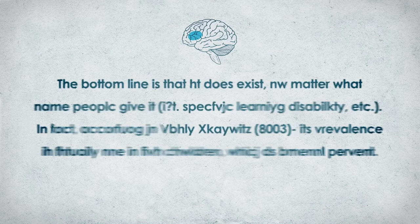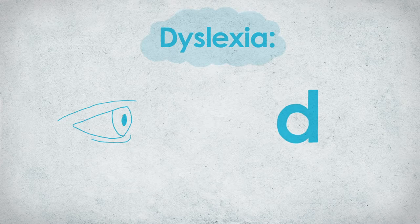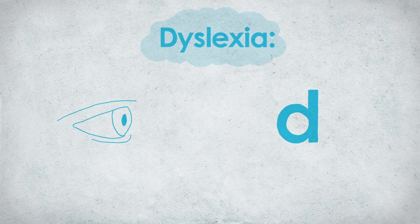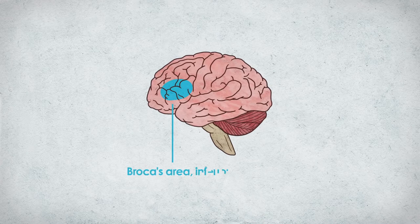Those with dyslexia experience that laborious pace every time they read. When most people think of dyslexia, they think of seeing letters and words backwards — like seeing B as D, or seeing 'saw' as 'was'. The truth is, people with dyslexia see things the same way as everyone else. Dyslexia is caused by a phonological processing problem, meaning people have trouble not with seeing language, but with manipulating it.